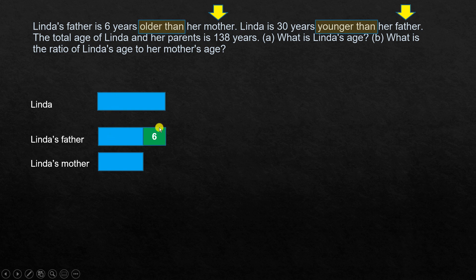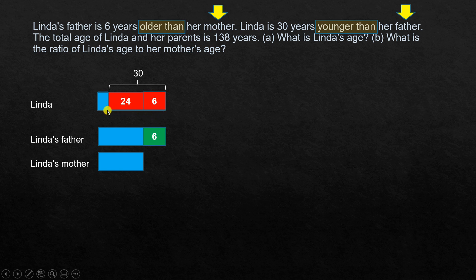We have to reduce 30 from Linda's father's bar because she is 30 years younger. When we reduce, this portion is six — the known quantity — which means the remaining size up to Linda's bar is 24. So we are reducing a total of 30: six comes from the extra portion, and 24 from the rest. An equal-sized box here would also be 24, and Linda's age is represented by what remains after removing the 30.